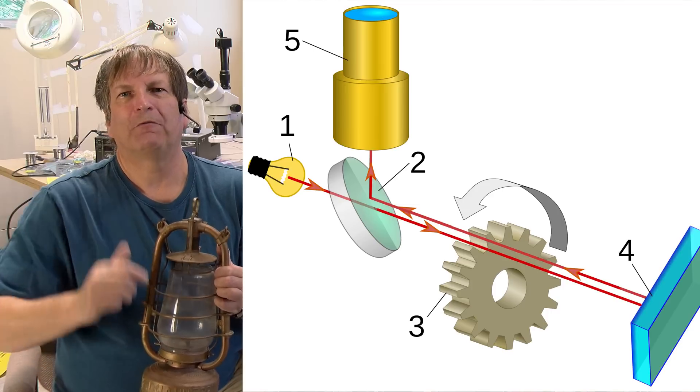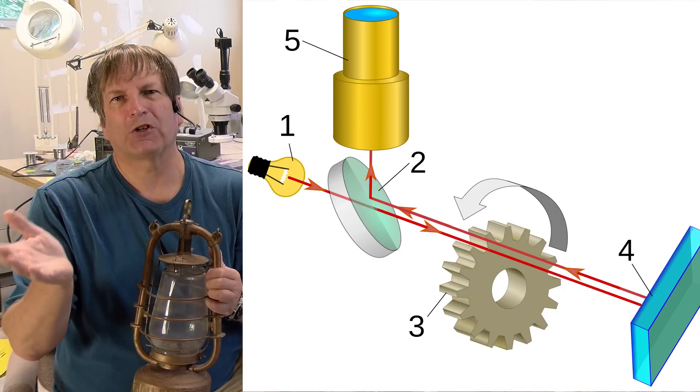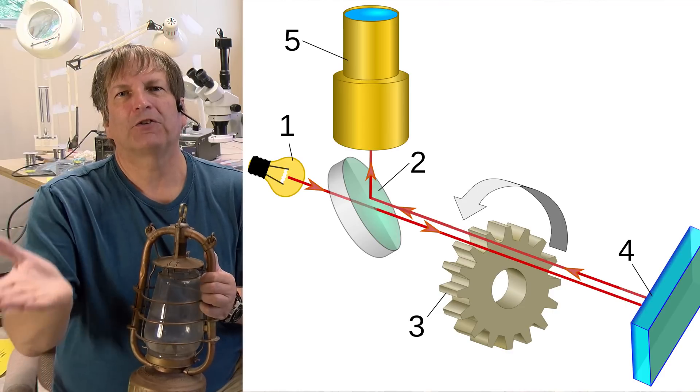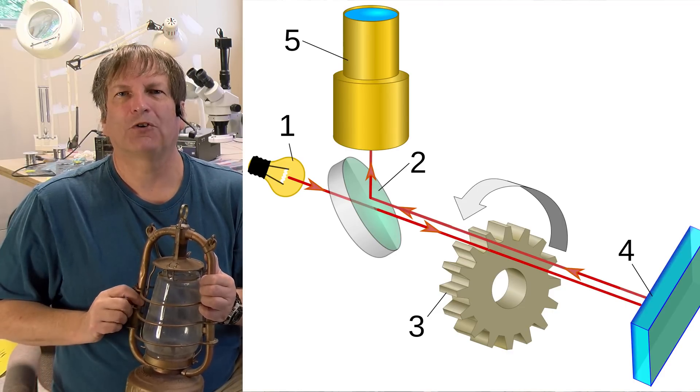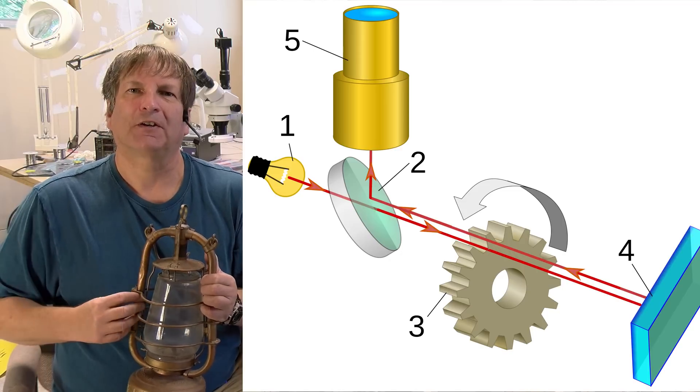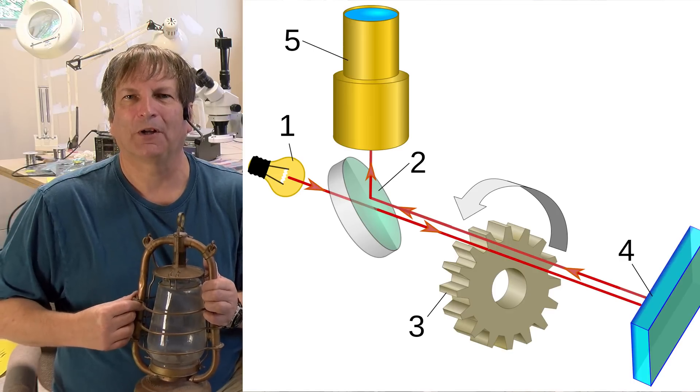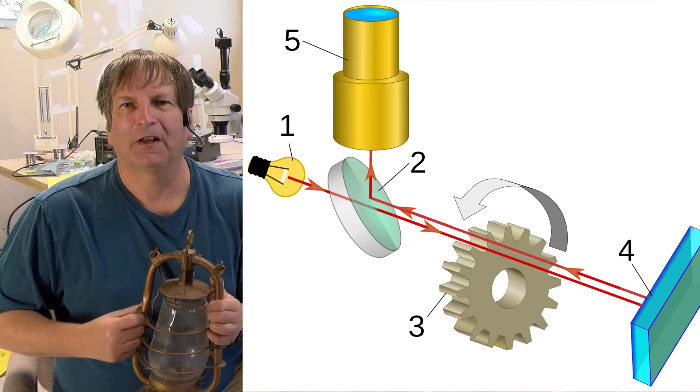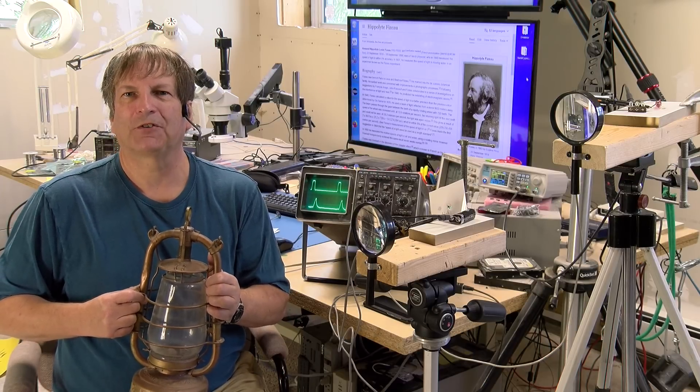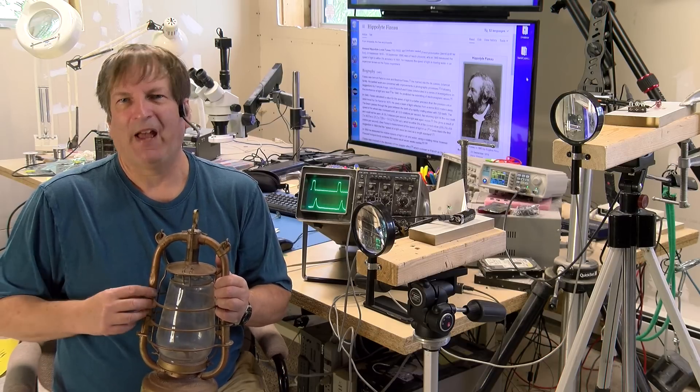Instead of the light coming through the exact position on the cogs where he had shot it out through the hill, it appeared to move a little bit in the direction of rotation of the cogwheels. By looking how many degrees the reflected beam appeared to move and by knowing the speed he was rotating the cogwheel, he was able to calculate the speed of light. He did that to within 5% of what we know it is today. His number was 315,000 kilometers a second compared to the 300,000 kilometers a second that it actually is.